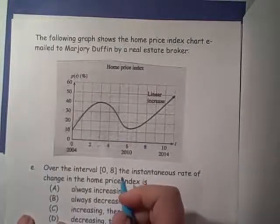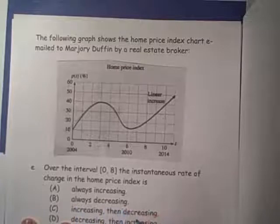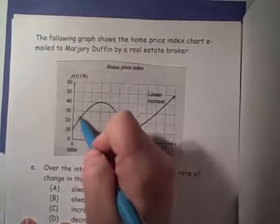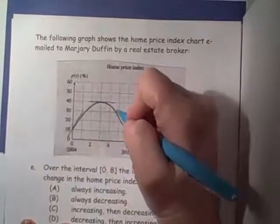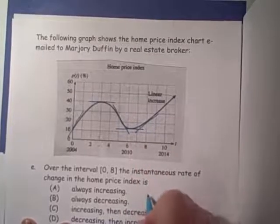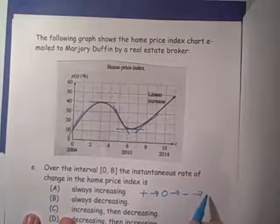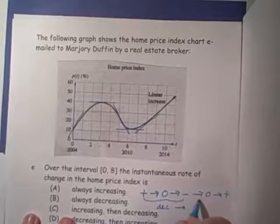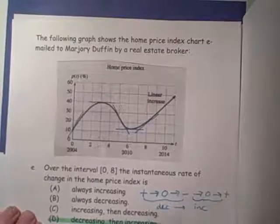For part E, over the interval 0 to 8, we start at 0 with a positive slope. As we move right, it becomes zero, then the slope gets negative, then zero again, then positive again. So we start with a positive number, move to zero, then negative, then zero, then back positive. From 0 to the middle, the instantaneous rate of change is decreasing; then from the middle to 8, it is increasing. The answer for part E is decreasing, then increasing.